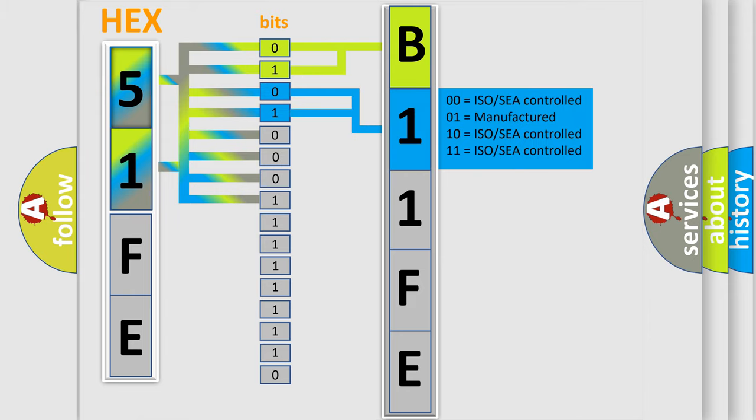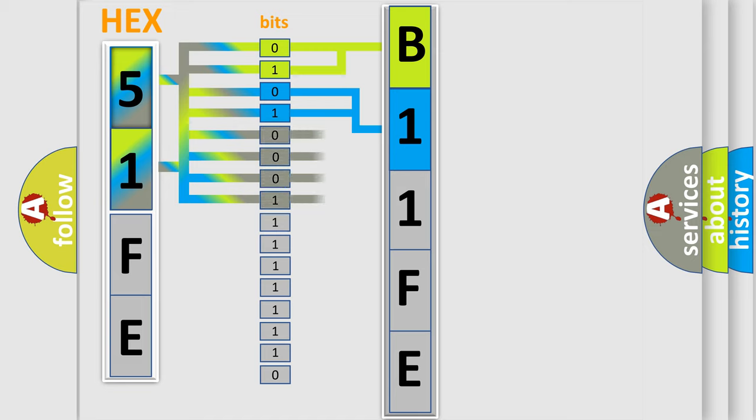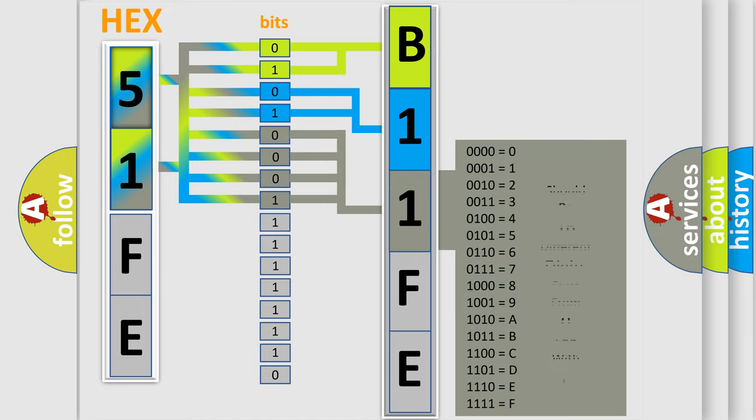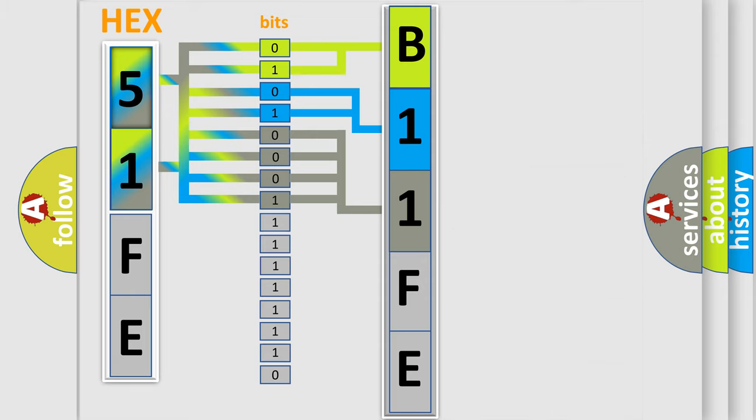A single byte conceals 256 possible combinations. We now know in what way the diagnostic tool translates the received information into a more comprehensible format.